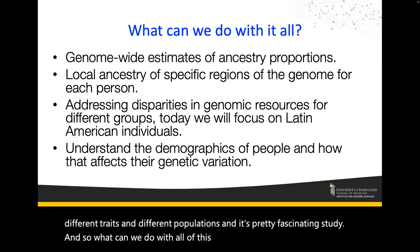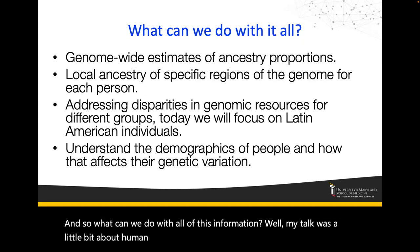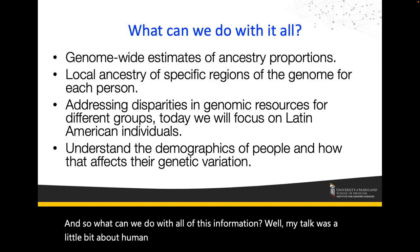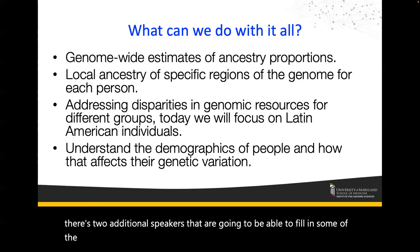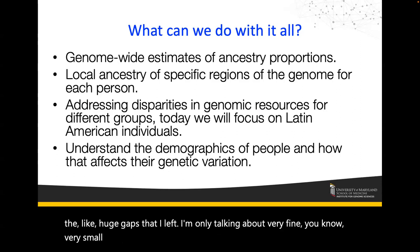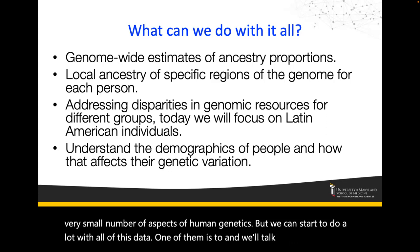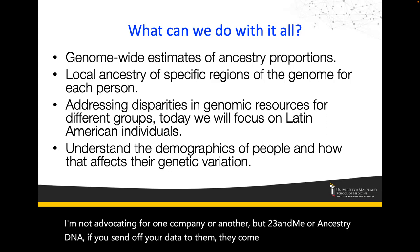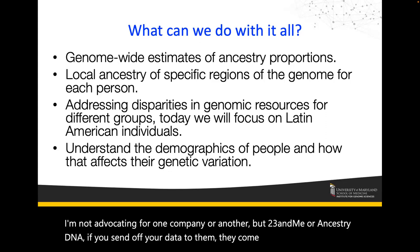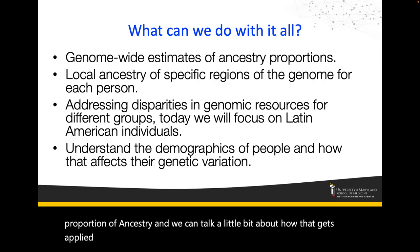What can we do with all of this information? We can start to look at ancestry proportions — like 23andMe or AncestryDNA, which return some proportion of ancestry — and we can talk about how that gets applied. We'll also talk about local ancestry: moving beyond genome-wide estimates to asking, at a particular location in the genome, what type of ancestry does this person have? One of the areas my group has focused on is Latin American individuals, filling in huge gaps in available genetic resources for those populations.